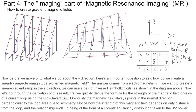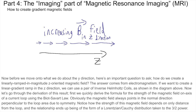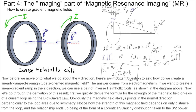Throughout all three-dimensional space, each voxel has some magnetic field vector with some magnitude pointing in the Z direction. Now before we move on to acquiring image data in the Y direction, here's an important question: how do we create a linearly ramped and magnitude Z-oriented magnetic field? The answer comes from electromagnetism. If we want to create a linear gradient ramp in the Z direction, we can use a pair of inverse Helmholtz coils as shown in the diagram above. Now let's go through the derivation of this result. First, we quickly derive the formula for the strength of the magnetic field on axis of a current loop using the Biot-Savart law.